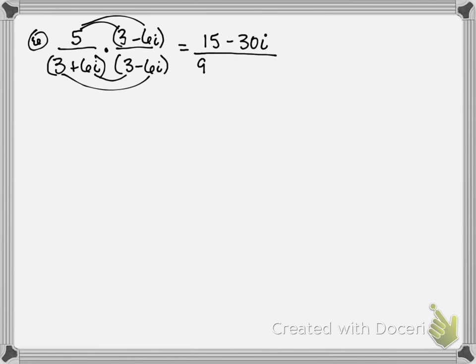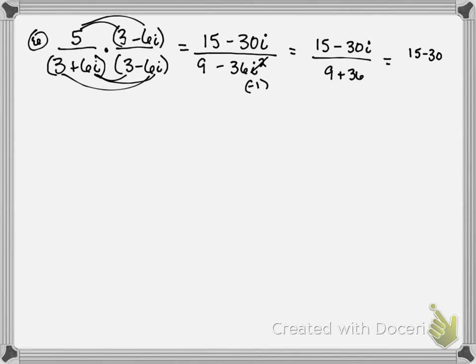So really all you've got to worry about is 6i times negative 6i, which is negative 36i squared. But didn't we talk about how i squared is really negative 1? So this is like 36 times negative 1 — so negative 36 times negative 1 is a positive 36. So this is 15 minus 30i over 9 plus 36. What's 9 plus 36? 45. So 15 minus 30i over 45 would be that answer — that one's done.